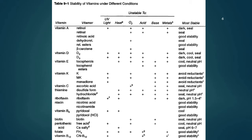These examples show that some types of vitamins are sensitive to different parameters, and how we store the product or the vitamin depends on the stability of the vitamin itself. For the rest, you can look at the table and relate it to how you should store each vitamin.